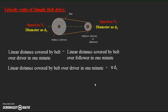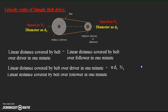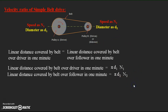We can write it as π·D1, which is the circumference of the driver pulley, multiplied by the number of rotations per minute N1, giving the distance covered per minute: π·D1·N1. Similarly, the linear distance covered by the belt over the follower is π·D2·N2.